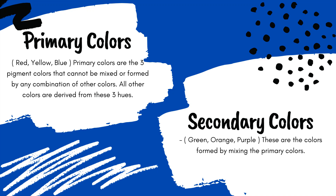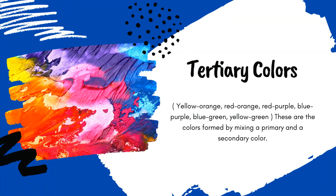The secondary colors consist of green, orange, and purple. These secondary colors are formed by mixing the primary colors. And then next is the tertiary colors. Tertiary colors consist of yellow-orange, red-orange, red-purple, blue-purple, blue-green, and yellow-green. These tertiary colors are formed by mixing a primary and a secondary color.